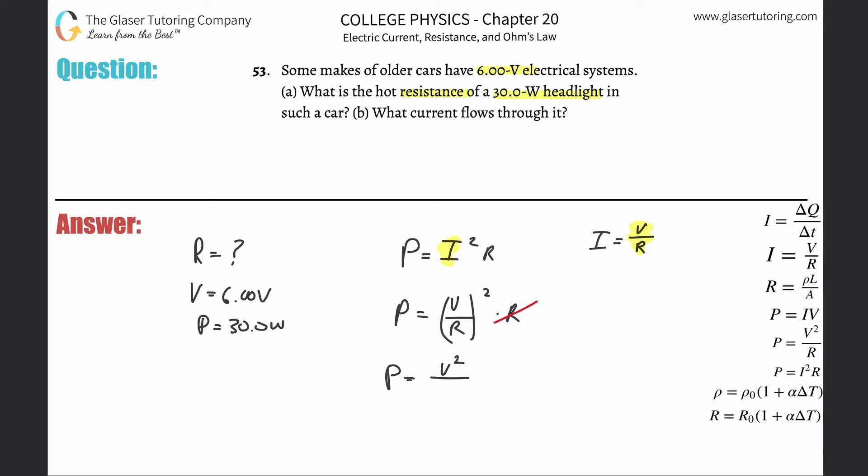Now I have everything I need. So it's going to be 6² over 30, and we plug that into the calculator. Let's see what we get. So we get 36 divided by 30. Oh, that's relatively straightforward, right? 1.2. So the answer would be 1.2.